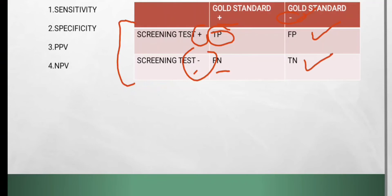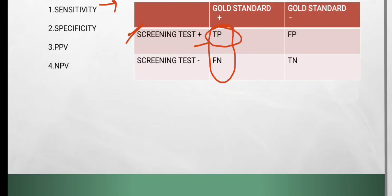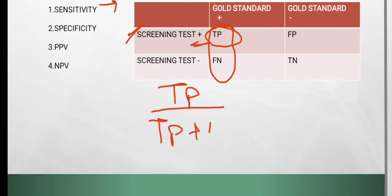Now let's talk about sensitivity. Sensitivity is the ability of the screening test to correctly identify all those who have the disease — the screening test can correctly identify those who actually had the disease and tested positive. The formula for sensitivity will be: true positive divided by true positive plus false negative.